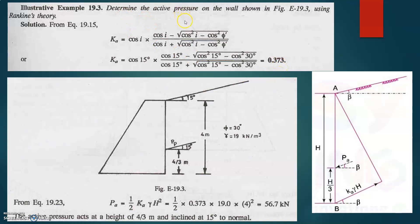Since only active pressure is required, we calculate Ka only. Once Ka is obtained, the pressure distribution diagram is triangular but inclined. The pressure at base equals Ka times gamma times h. Total active earth pressure equals area of the triangle: half times Ka times gamma times h squared. Substituting — half times 0.373 times 19 times 4 squared — we get 56.7 kilonewtons, acting at height h divided by 3, that is 4 divided by 3 from the base, and inclined at 15 degrees to the normal.